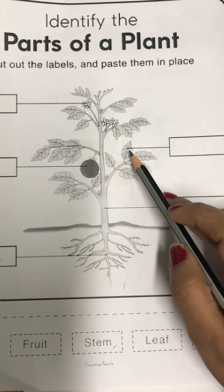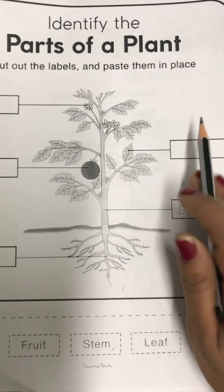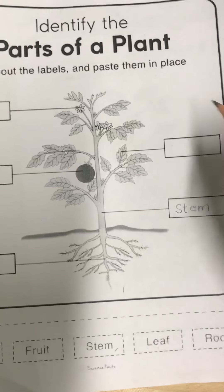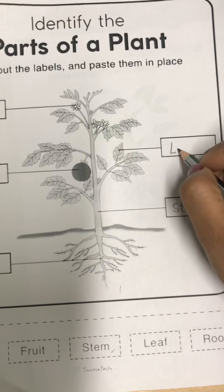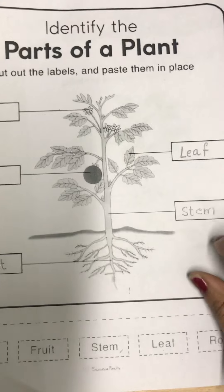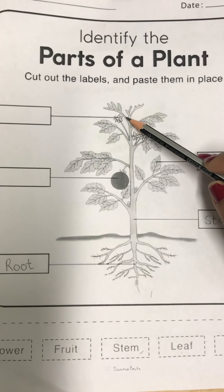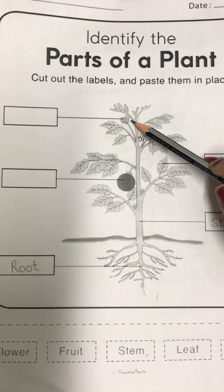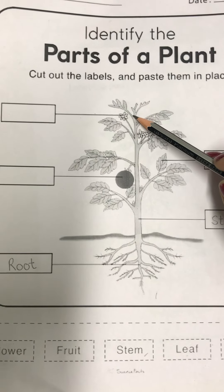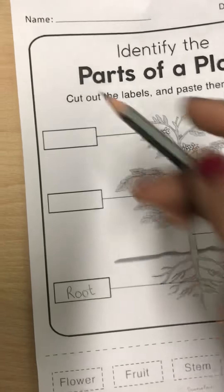Next are the leaves. Leaves prepare food for the plant and they are green due to the presence of chlorophyll. Write down: leaf. Now move on to next — this is the beautiful part of a plant. It blossoms and produces seeds that can be grown into a new plant. So these are flowers. Write down: flower.